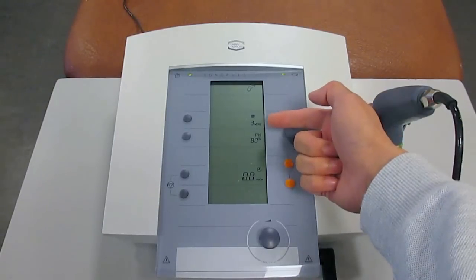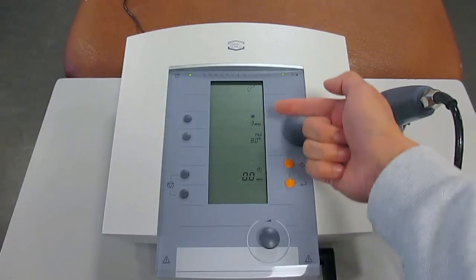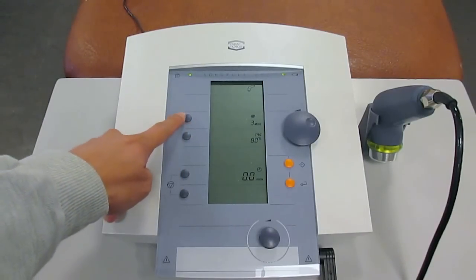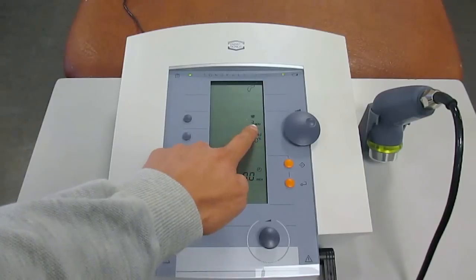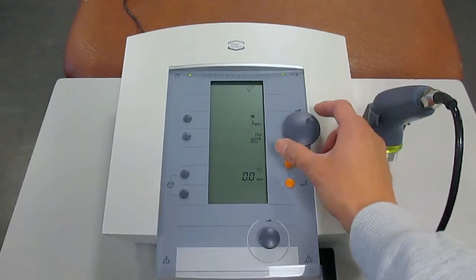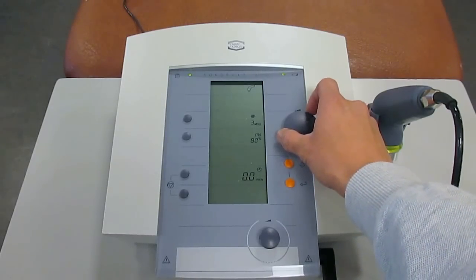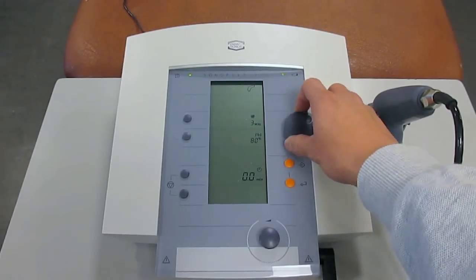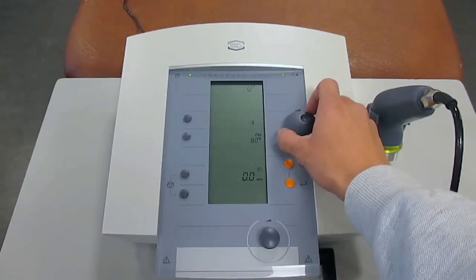There are several parameters that you can actually choose from for the ultrasound Sonopulse 490. The very first parameter we'll be interested in is this button over here. If you press this button, the parameter will start to flash on the LCD screen. You can use this big dial to change the parameter. This is the frequency of the ultrasound. For the Sonopulse 490, it offers you 1 MHz as well as 3 MHz pulse settings.